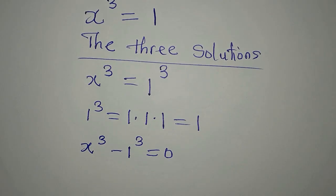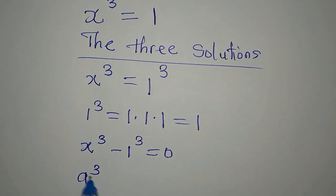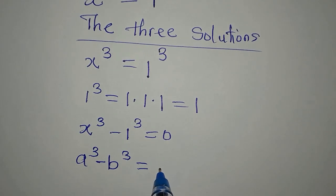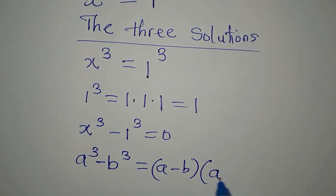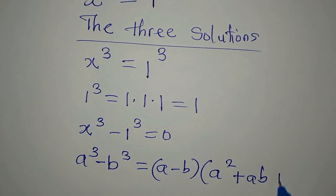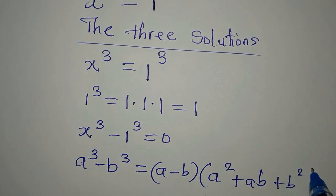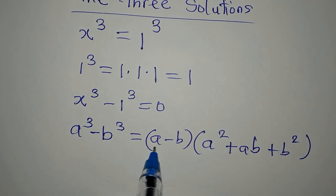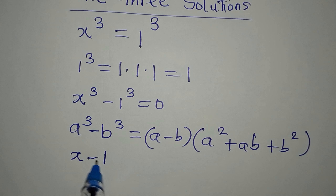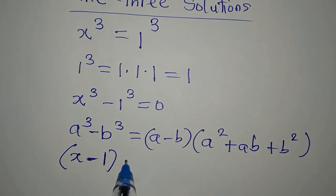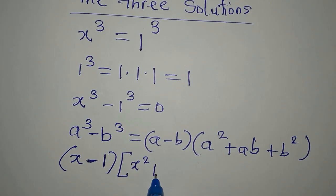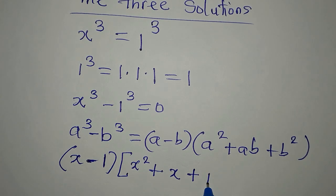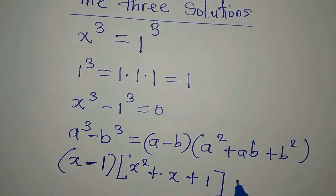Now, from here, what will I do? I can apply the difference of cubes: A to the power of three minus B to the power of three. If you have this, it is the same thing as A minus B, into A squared plus AB plus B squared. So I'm going to express this in that form. Our A is x, so I write x minus B, which is one, in brackets, then A squared, which is x squared, plus AB which is x times one, which is x, then plus B squared, which is one squared, still one. Then we close this bracket and equate to zero.